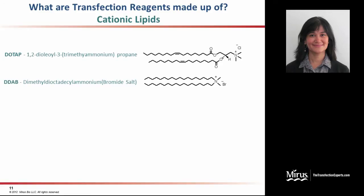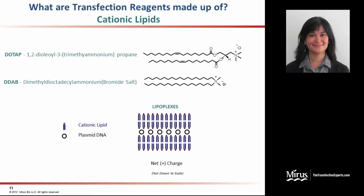A few examples are DOTAP and DTAP. The polar nature of these lipids allows the positively charged head group to associate effectively with a negatively charged nucleic acid, while the hydrophobic tails can associate with themselves to form complexes called lipoplexes. These complexes need to have a net positive charge to effectively associate with the cellular membrane, which is negatively charged.